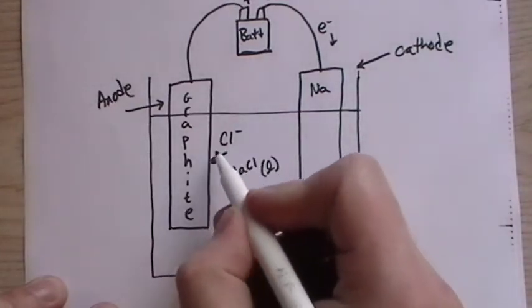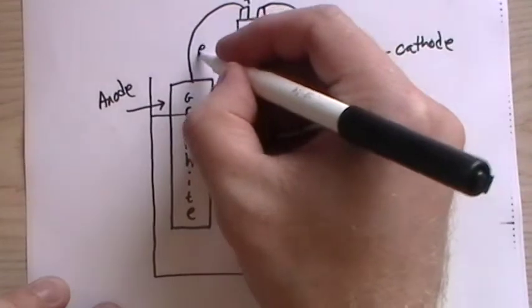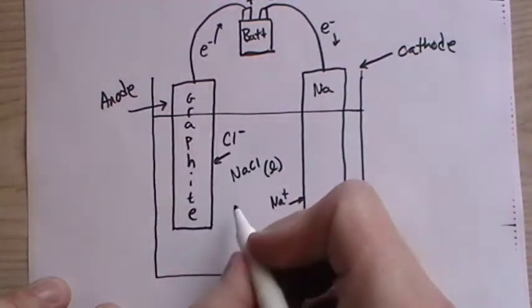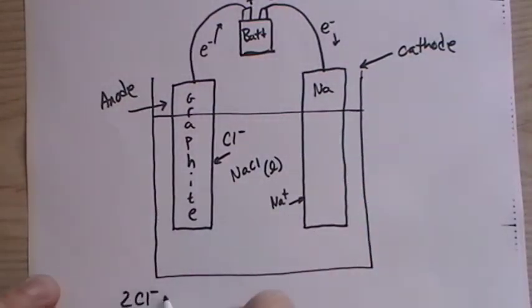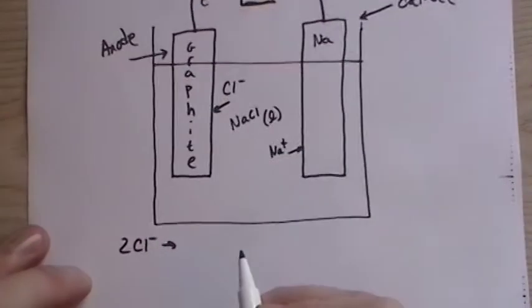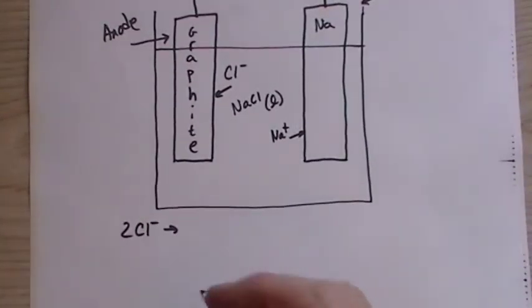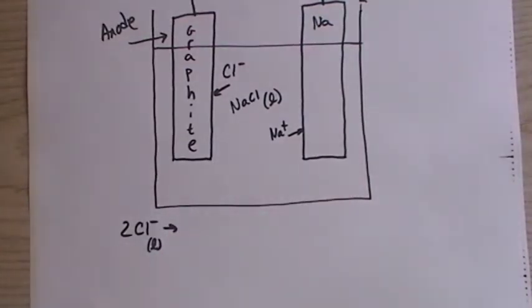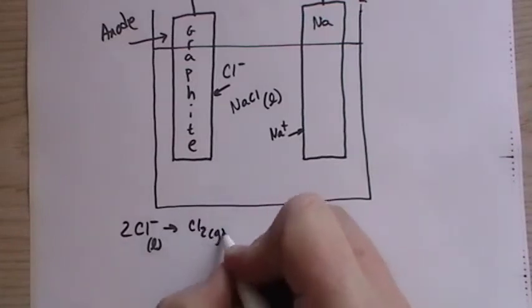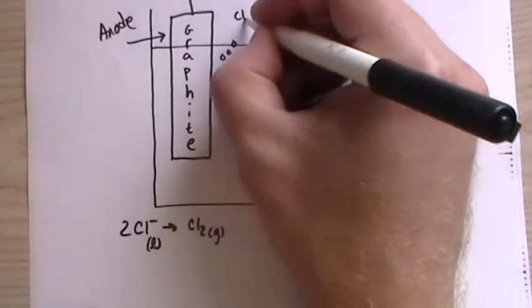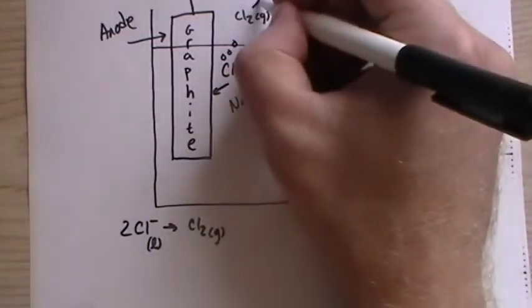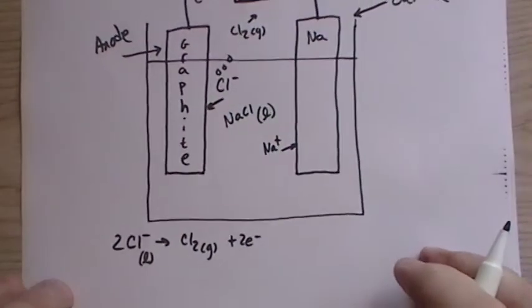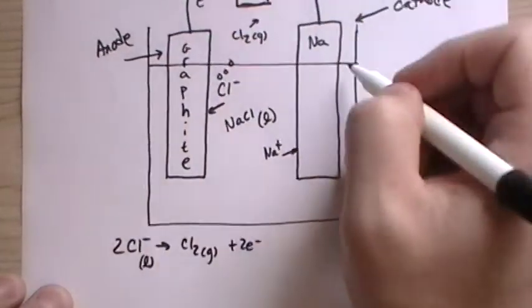Now, when the chlorine approaches the graphite, the electrons are stolen away by that positive charge on the battery putting on the anode. And so two chlorines come together. They're liquid. They react together against the graphite electrode, the anode. And they produce chlorine gas, which bubbles up. We get chlorine gas that bubbles away. And we lose two electrons that go into the circuit.